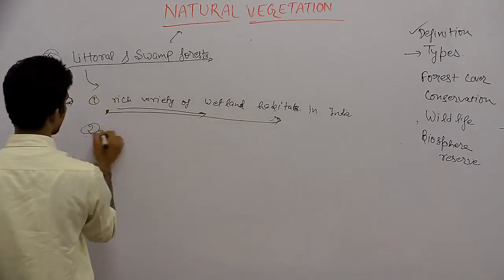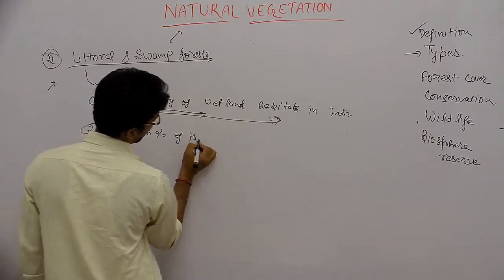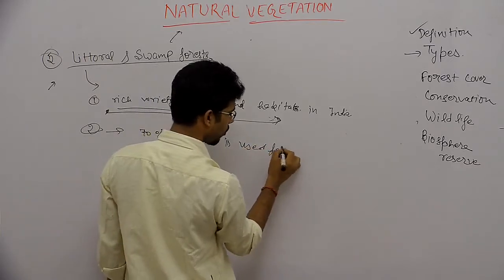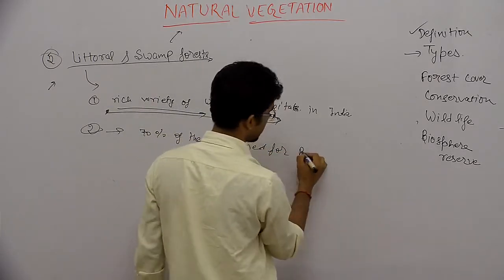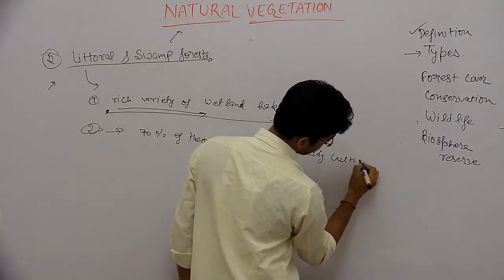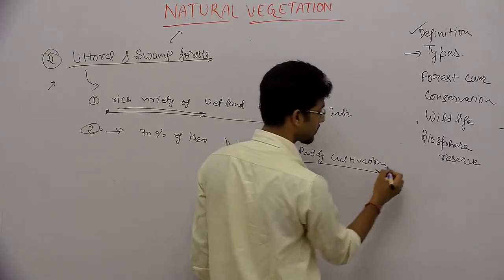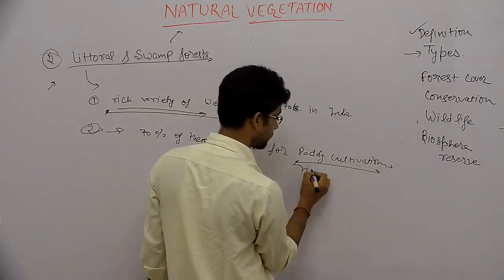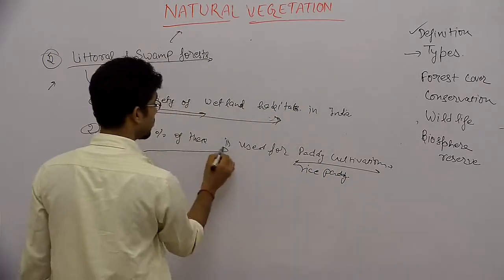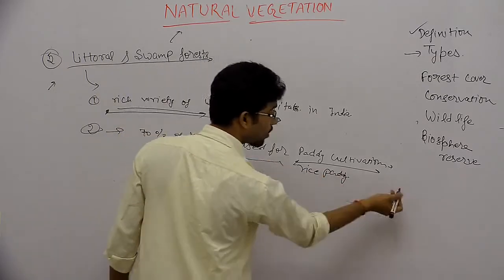About 70% of these wetlands are used for paddy cultivation — that is, rice paddy farming.